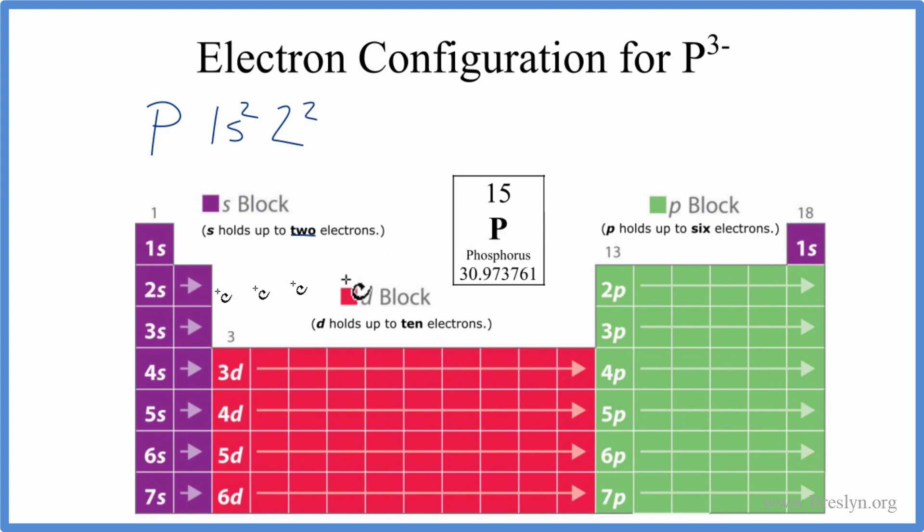So we have 2p next. And p can hold up to six. We'll put all six in there. We've used 10. From 2p, we go to 3s. We'll put two in the 3s. And now we have 12 total electrons.